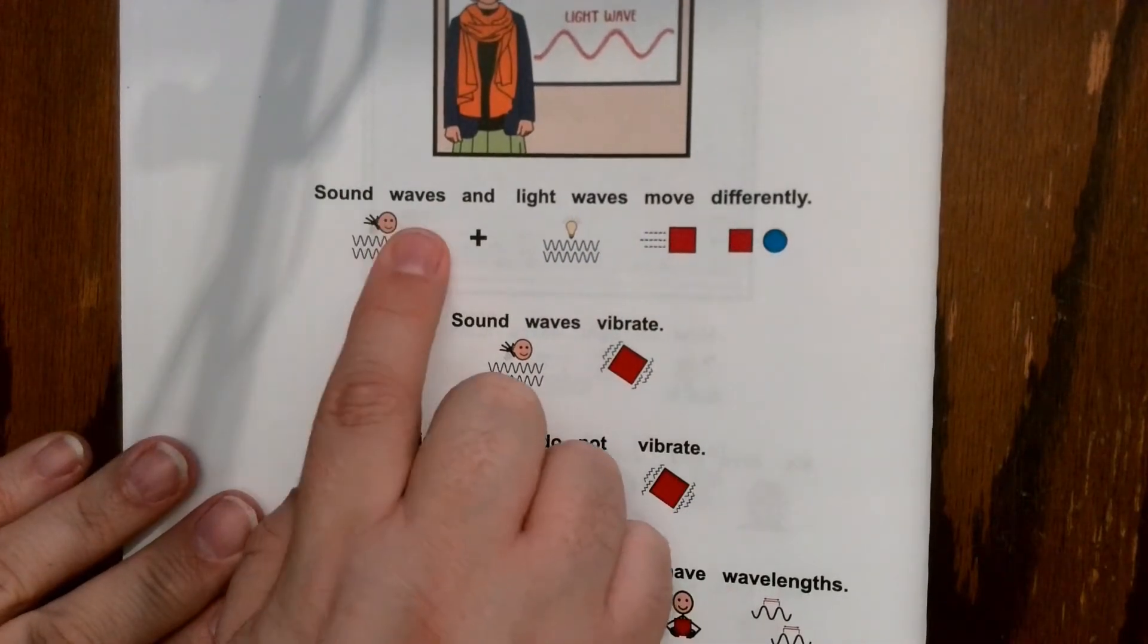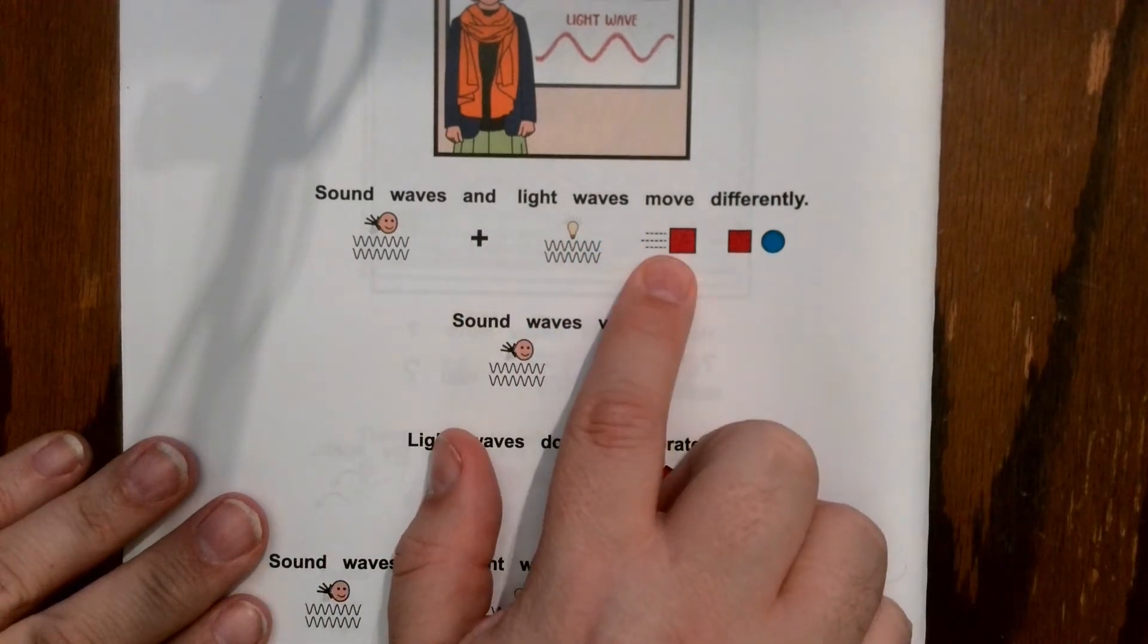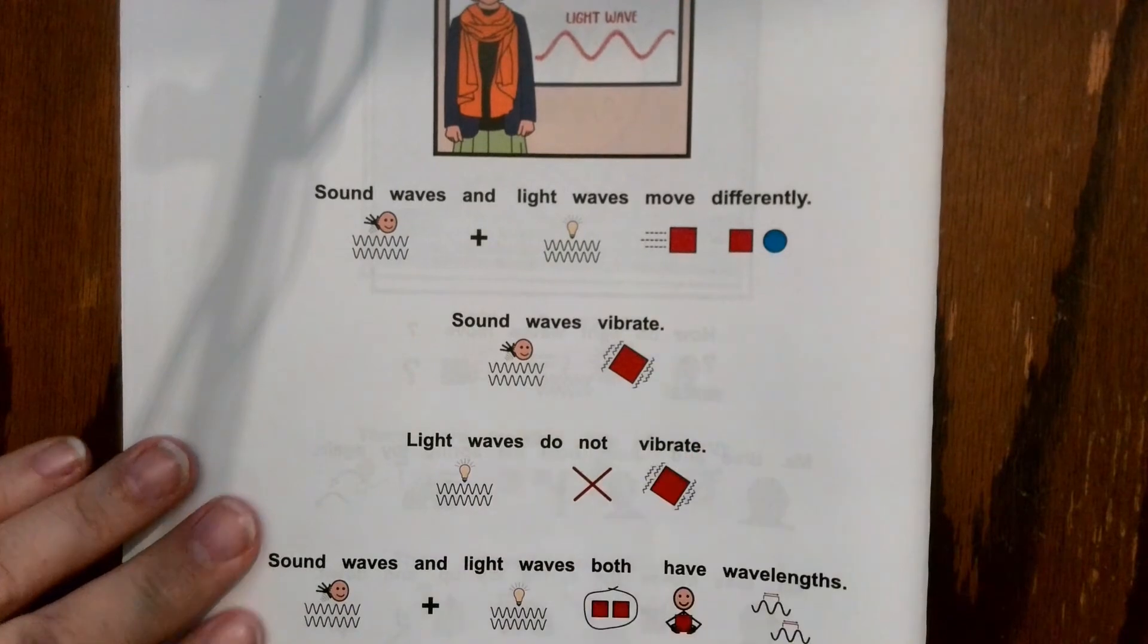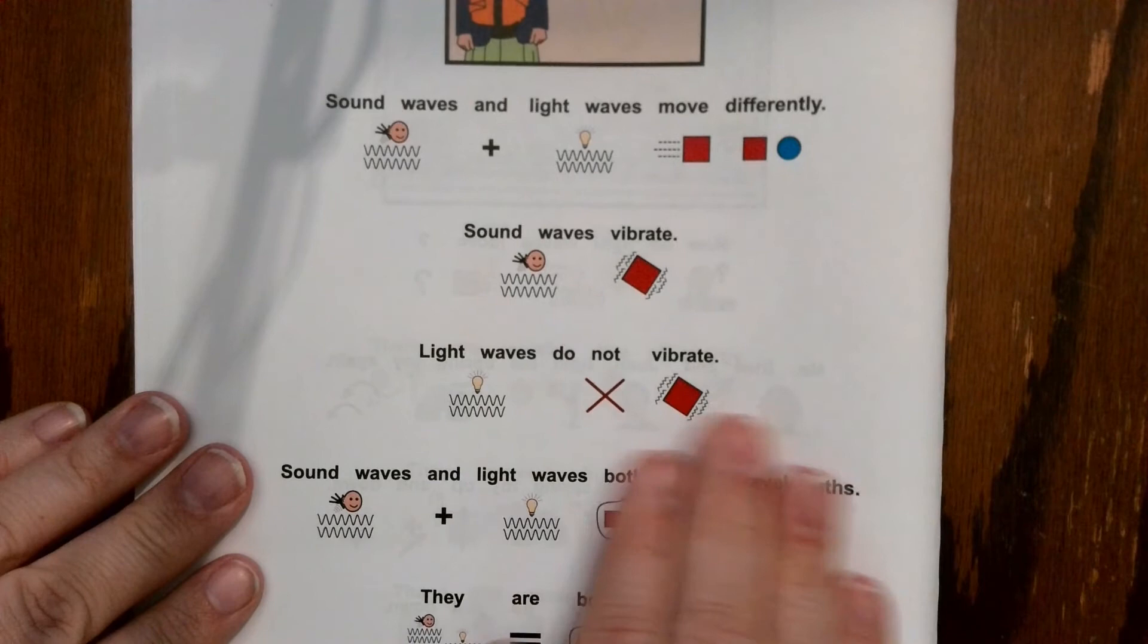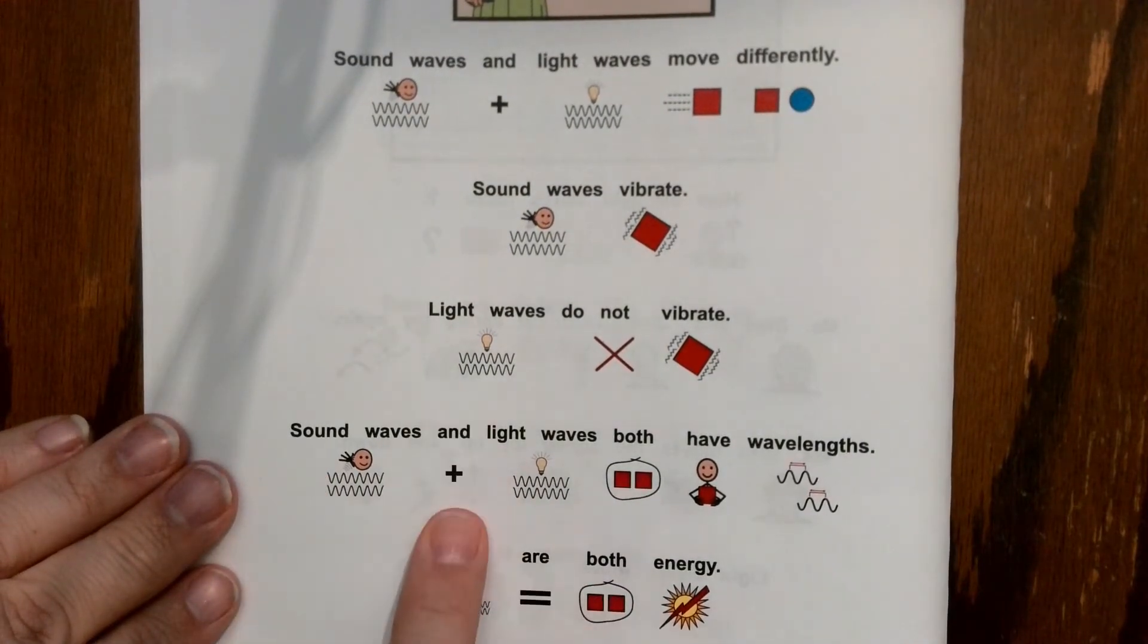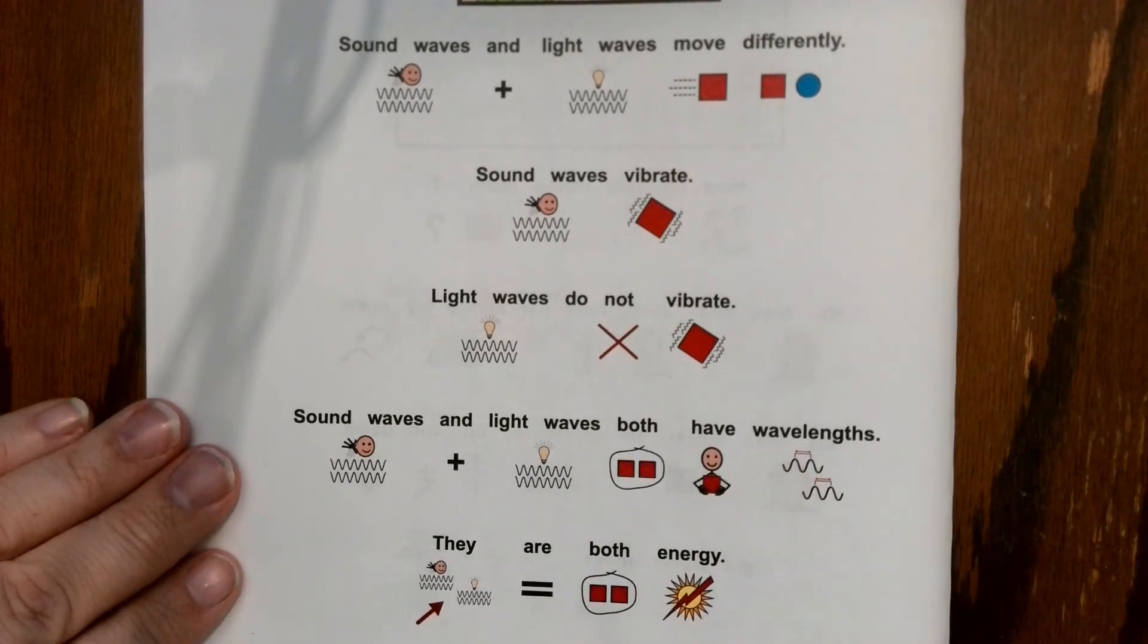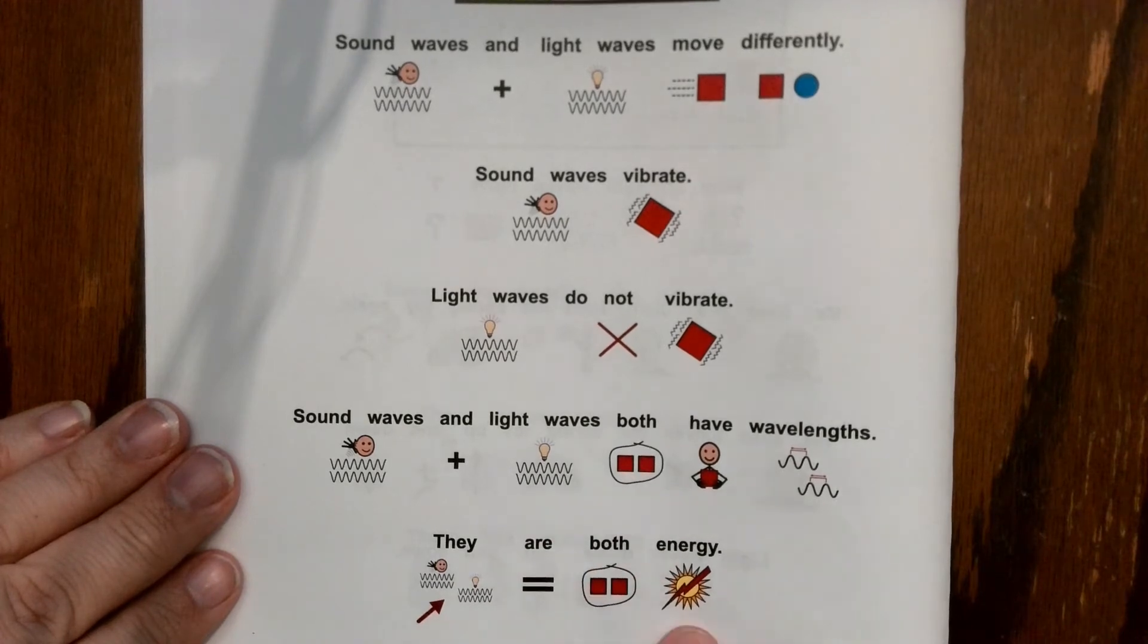Sound waves and light waves move differently. Sound waves vibrate, light waves do not vibrate. Sound waves and light waves both have wavelengths. They are both energy.